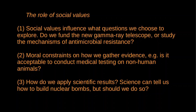Second, there are ethical constraints on how we go about gathering evidence. For example, is it acceptable to conduct medical testing on non-human animals? What are the requirements of informed consent for study participants? These impose significant constraints on how scientists can go about gathering evidence for their theories. In that sense, scientific methods are limited by social values.